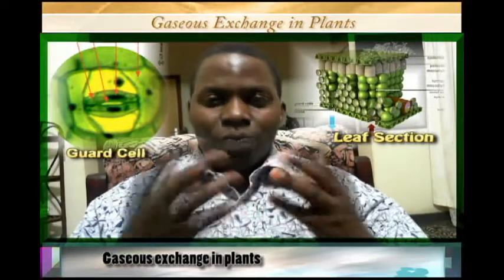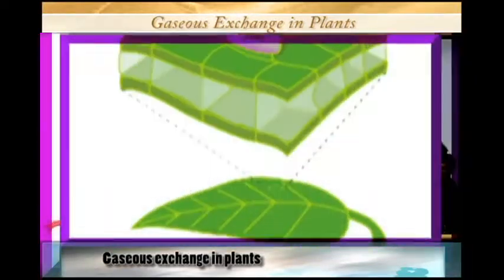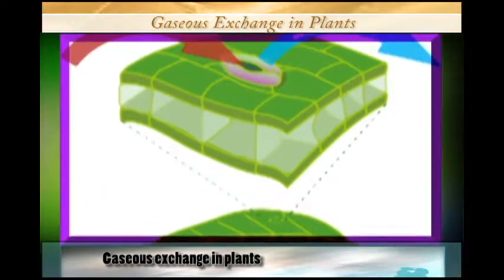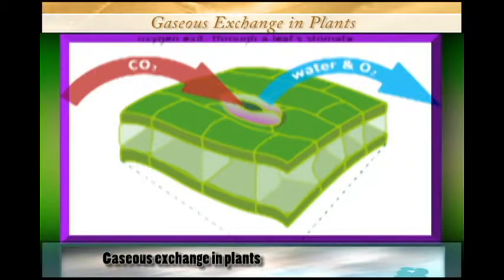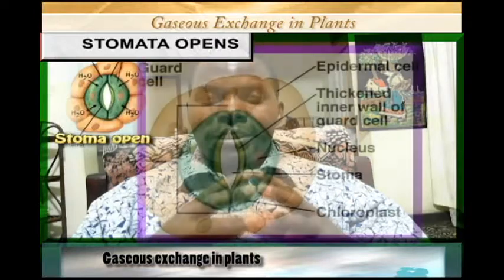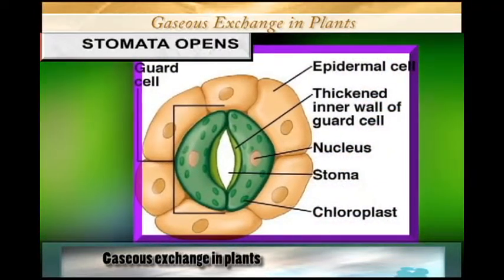We are now going to talk about gaseous exchange in plants — how does gaseous exchange take place in plants. We are mainly going to look at the opening of the stomata and then the closing of the stomata. Those are the two main activities that are involved in gaseous exchange in plants. We shall start with the opening of the stomata.